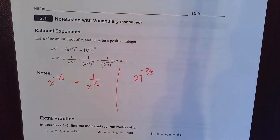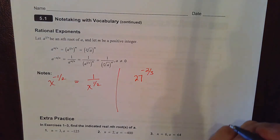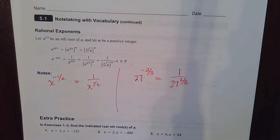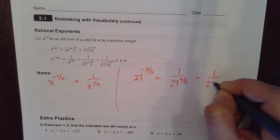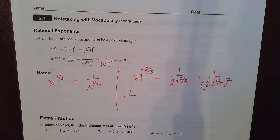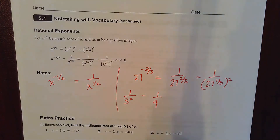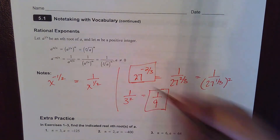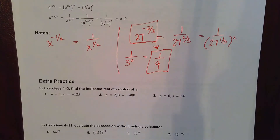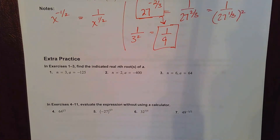Another example: 27 to the negative 2/3 — this is one I'd expect you to evaluate without a calculator. Your first step is to rewrite without negative exponents, so bump that to the bottom making it 1 over 27 to the 2/3. Next, separate the root from the power — the 1/3 is your root and 2 is your power. Then simplify: 27 to the 1/3 means the cube root of 27, which is 3. Finally, 3 squared is 9, so the answer is 1/9. 27 to the negative 2/3 is 1/9.